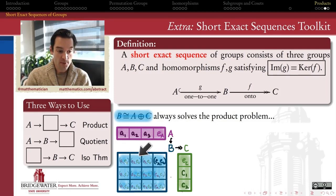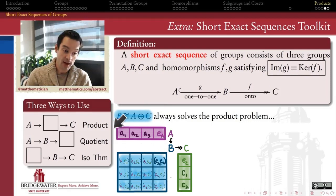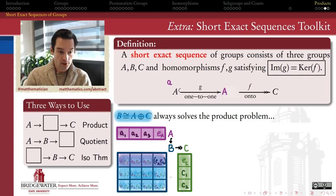Then, if this group here in the middle, if this B were the external direct product, that means that the elements in here would all be just the ordered pairs of elements from A, elements from C. So, why would this solve the product problem? What would the homomorphisms F and G actually be to make this into a short exact sequence?